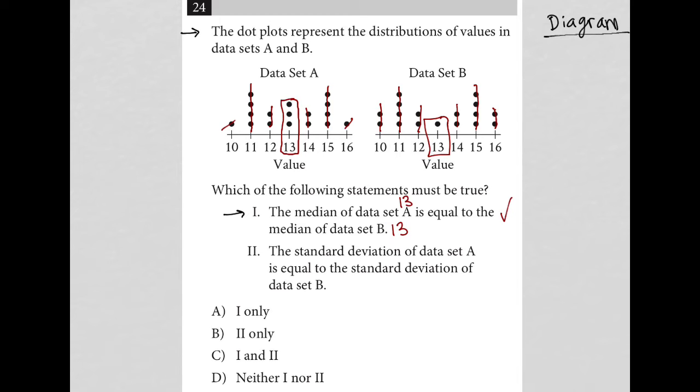So yeah, it is absolutely true that the median of data set A is equal to the median of data set B. So I'm going to cross out choice B because that says two only, but we just proved that statement one is correct. And I'm going to cross out choice D because it says neither statement one nor statement two.